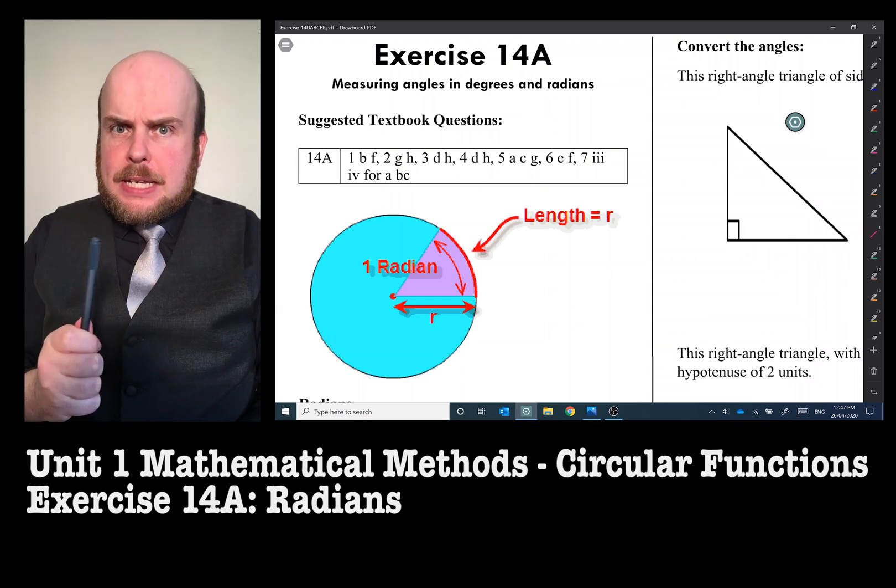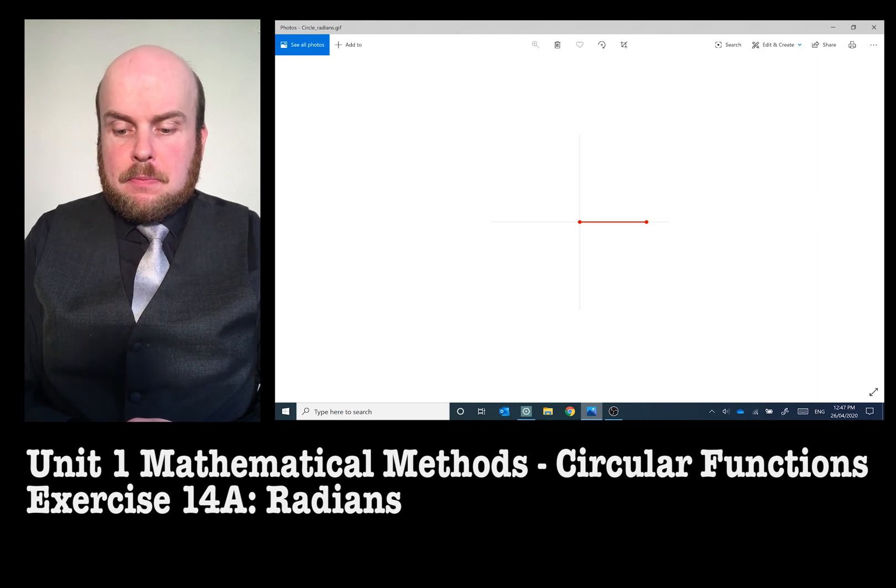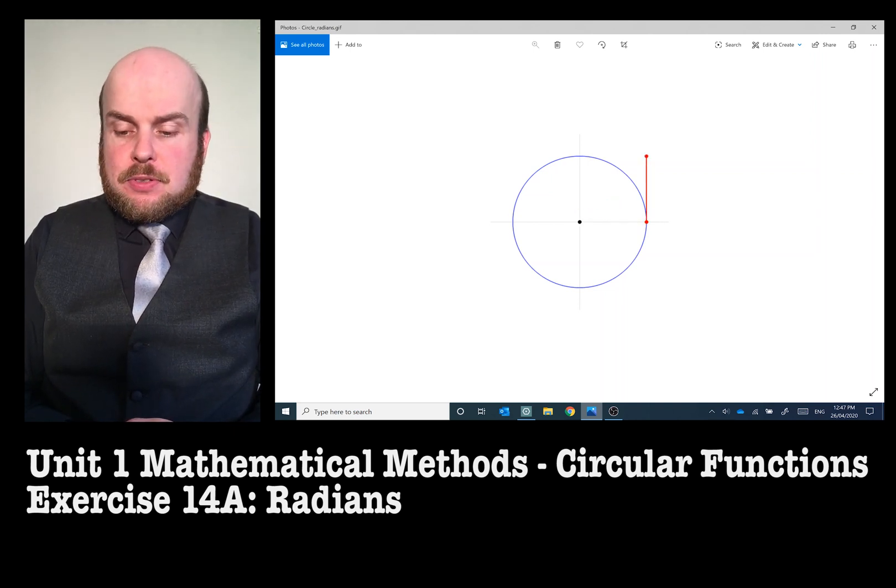So what does a radian mean? Here we go. Here is a circle being made. There is the radius R. Now if I take out the R, just pull it out from there, and what I'm doing is I'm bending it around the circle and then I connect to the center. The angle in between is one radian.